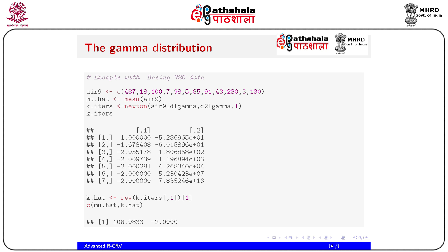For the Boeing 720 data example, r9 contains the values: 482, 1800, 798, 585, 91, 43, 233, 130. Compute mu_hat = mean(r9), then run the Newton-Raphson function passing r9, dl_gamma, d2ll_gamma, and initial value 2 with eps = 1. The iteration output k_iter shows convergence, and k_hat = k_iter[1,1] gives the shape parameter estimate. The result shows mu_hat ≈ 100.9 and k_hat ≈ -2.00.